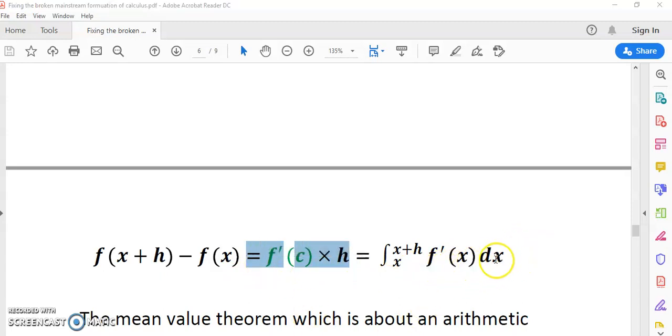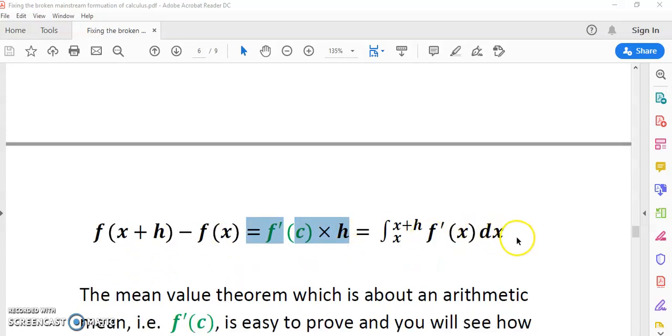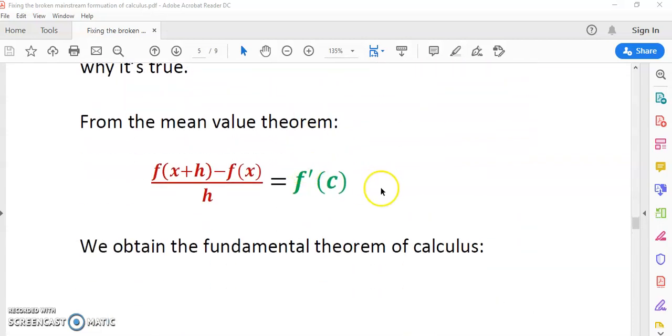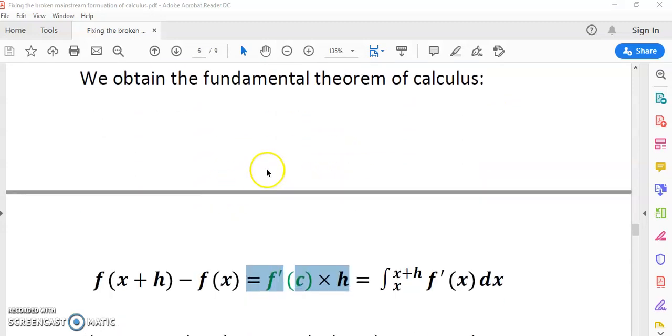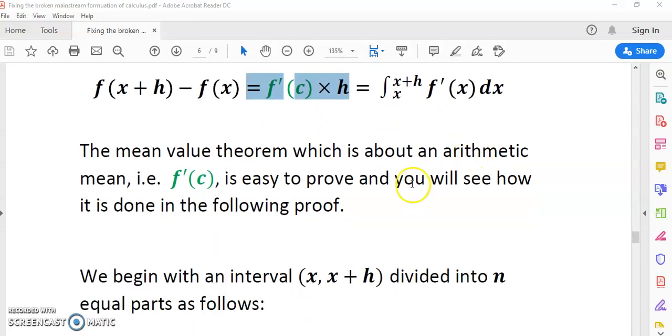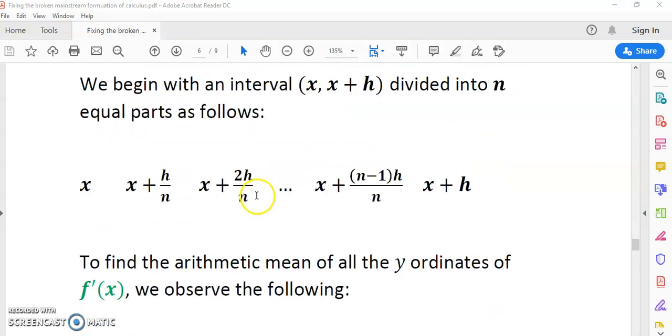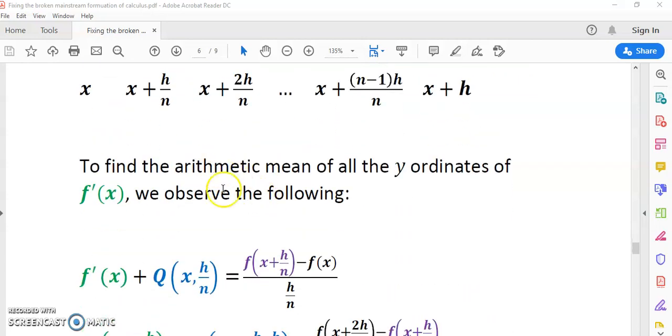In your mainstream calculus, the right-hand side gives area, but the right-hand side is actually equal to the arithmetic mean times the interval width, and that gives you the area as you see over here. So we derive the fundamental theorem directly in one step from the mean value theorem. In my opinion, the mean value theorem should have been called the fundamental theorem because all the other theorems are derived from it.